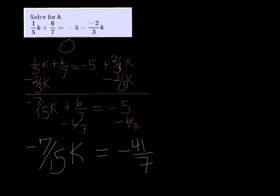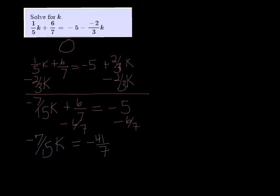So we have negative 7/15k equals negative 41/7. The last thing we need to do is divide both sides by negative 7/15. So on the left, the negative 7/15 over negative 7/15 is just going to be k. And then on the right, I already have negative 41 over 7 in my calculator, so I'm just going to divide that by negative 7 over 15.